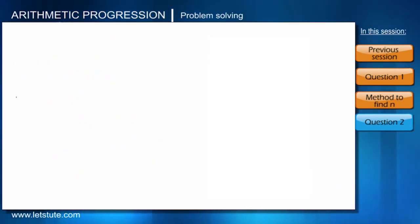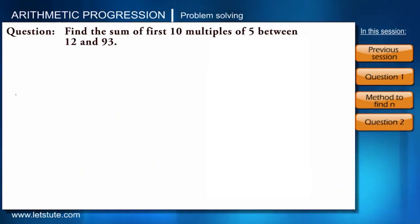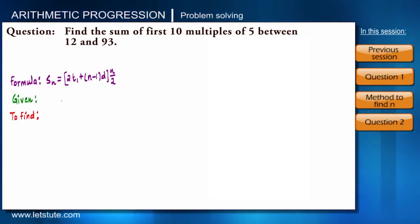Let's go ahead and try some more questions. This question says find the sum of 10 multiples of 5 between 12 and 93. First of all, question says to find sum of the numbers, that means we will use second formula SN. It says find first 10 multiples of 5, that means N is given to us. There will be 10 multiples of 5 and we will have to add them. So now we have to find T1 and D only.